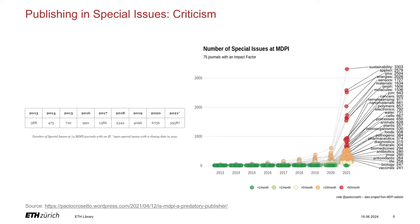On this slide I quote results of an analysis of special issues at MDPI conducted by Paulo Crosetto, a senior researcher and experimental economist at the French research institute for agriculture, food and the environment. On the left we can see how the number of special issues has nominally developed over nine years from a total of 75 MDPI journal titles. In 2013 there were an average of five special issues per journal title; in 2021 there were a staggering 500-plus special issues per journal title — an incredible increase.